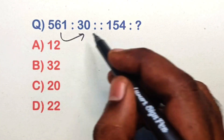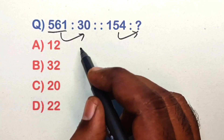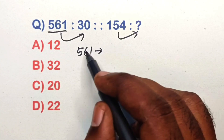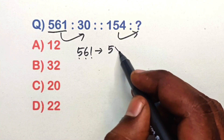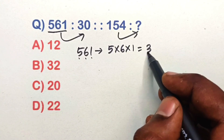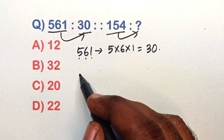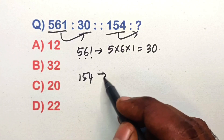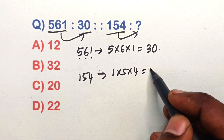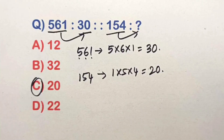Find the relation in this analogy equation. Take 561 — multiply these digits: 5 times 6 times 1 equals 30. Same way, take 154 — multiply the digits to get 20. Option C is the correct answer.